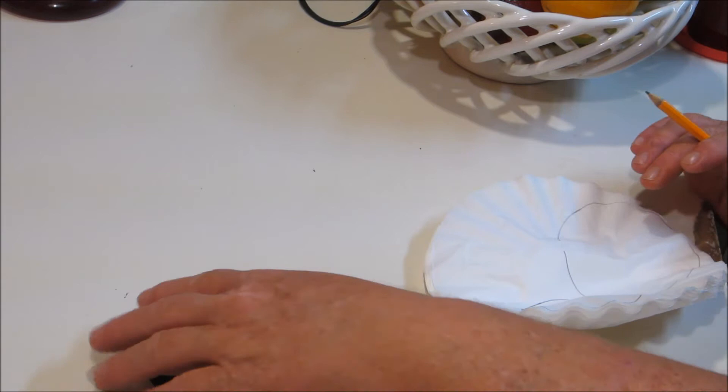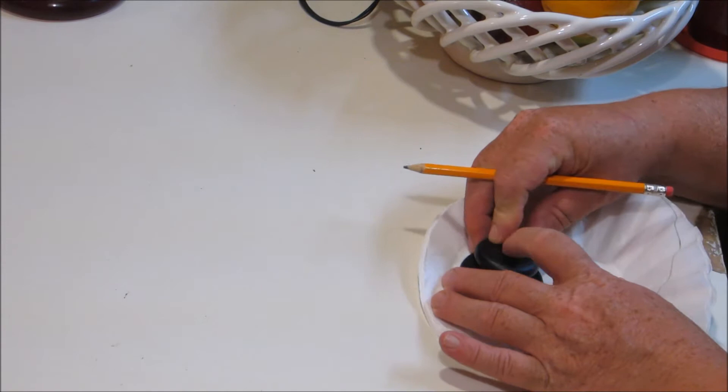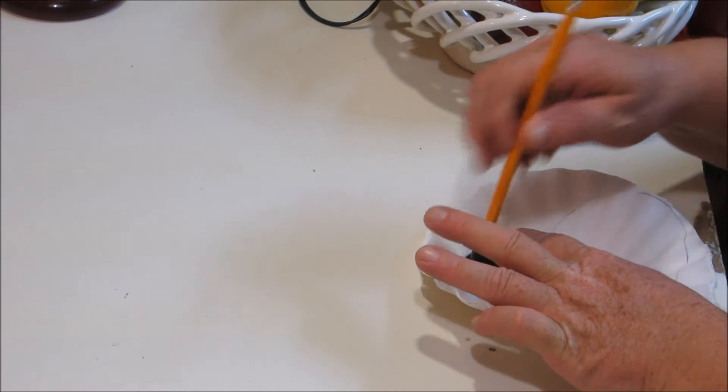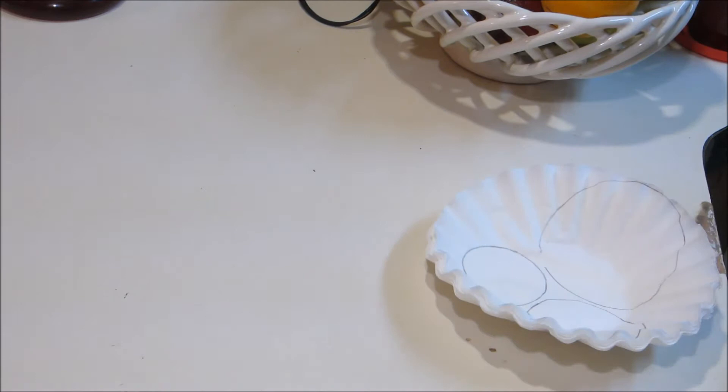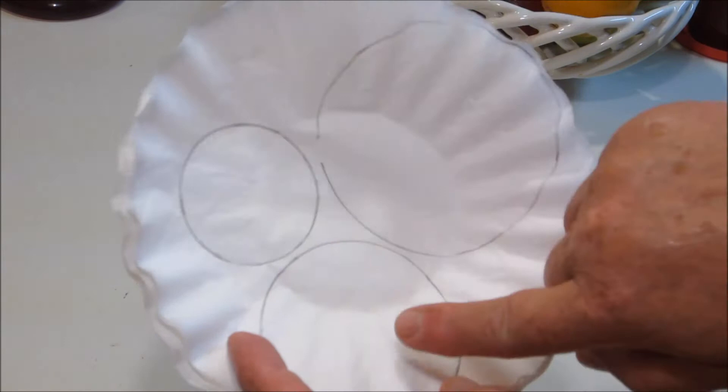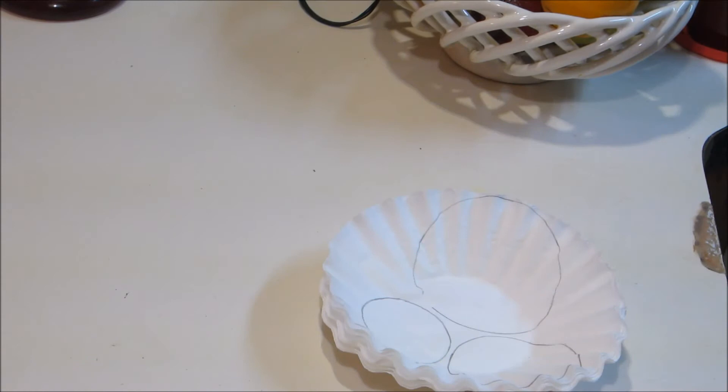Now we're going to go over here and do a two-inch circle. All right, and there we are. We got a four, hopefully you guys can see that, we got a four, a three, and a two. Now we're going to cut these out.